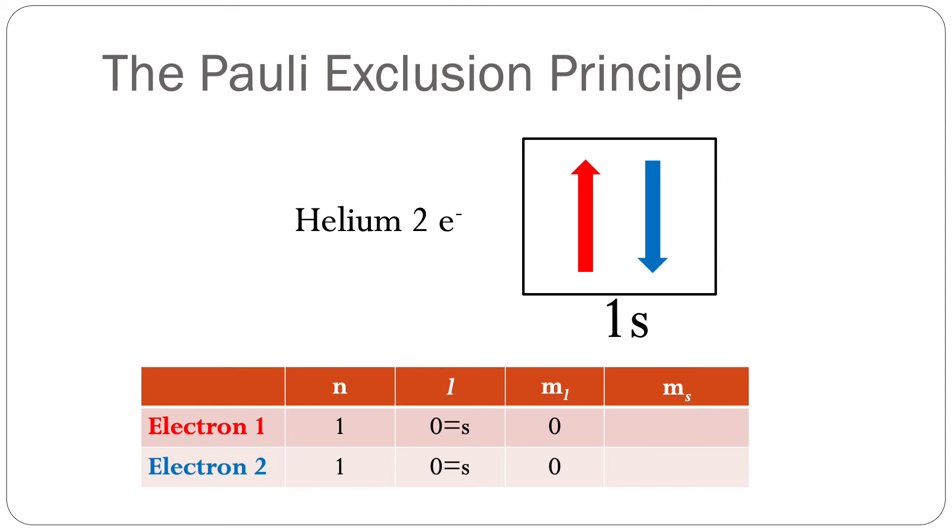From a quantum number perspective, these electrons can be assigned a set of quantum numbers. First, they are both occupying the 1s orbital. Recall that 1 is the principal quantum number and s is the letter designation for angular momentum equals zero.